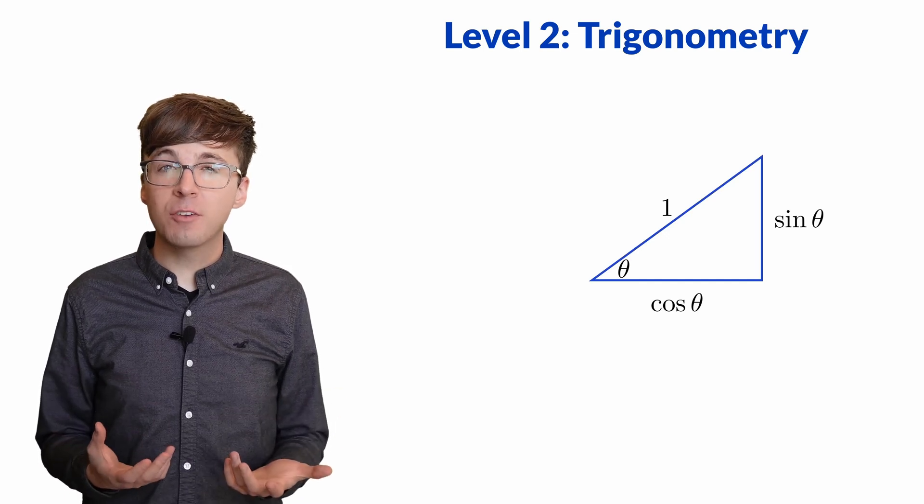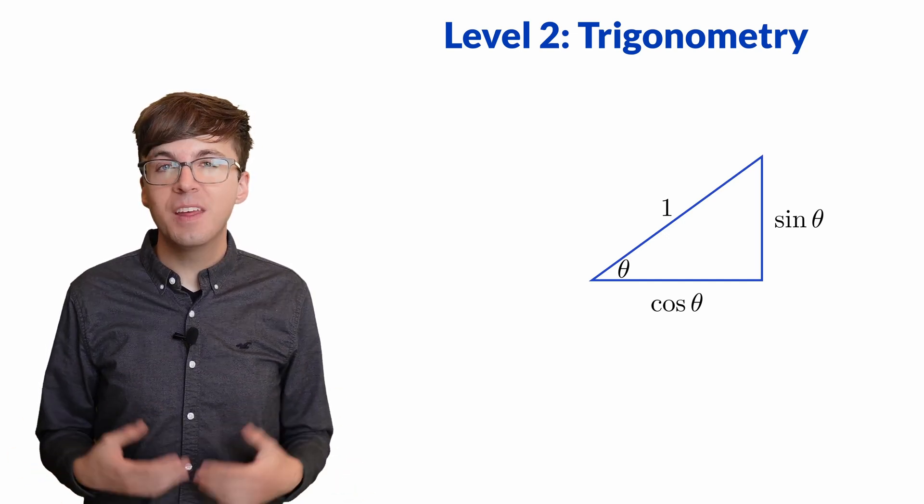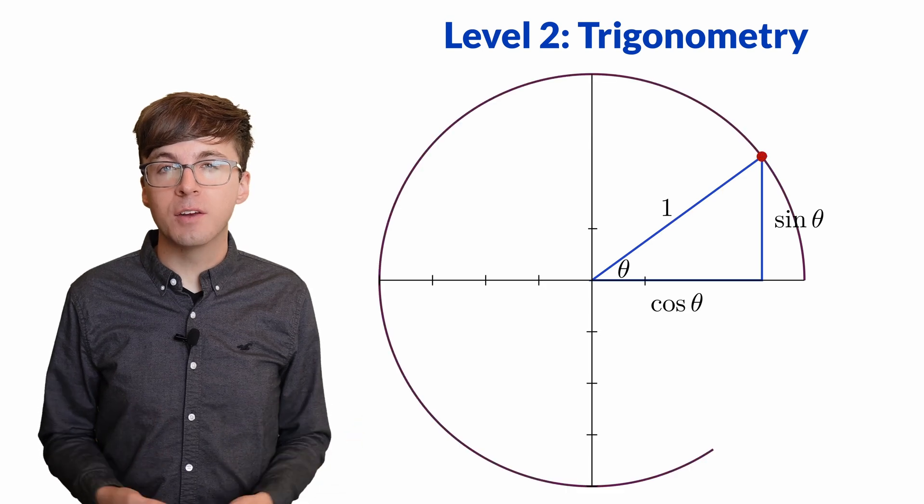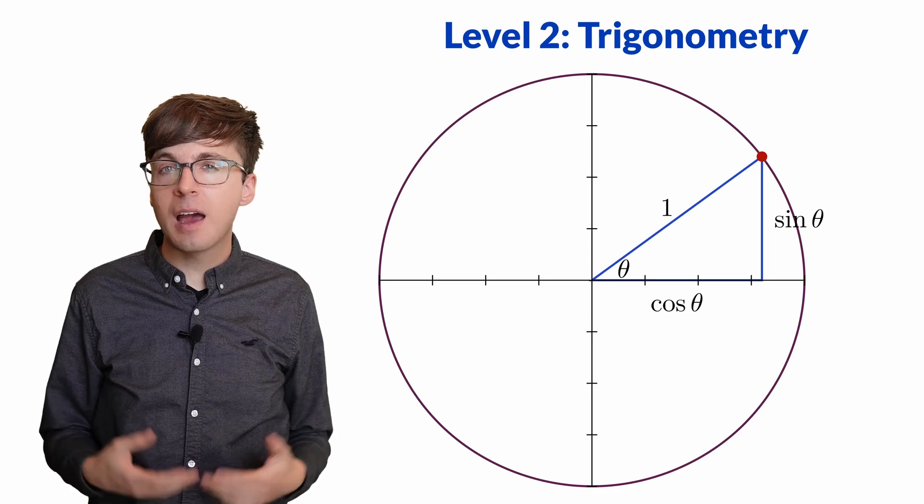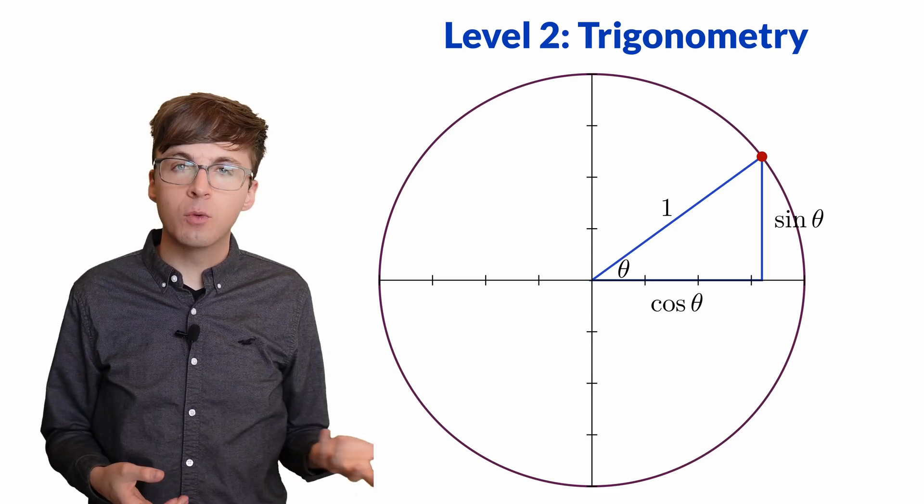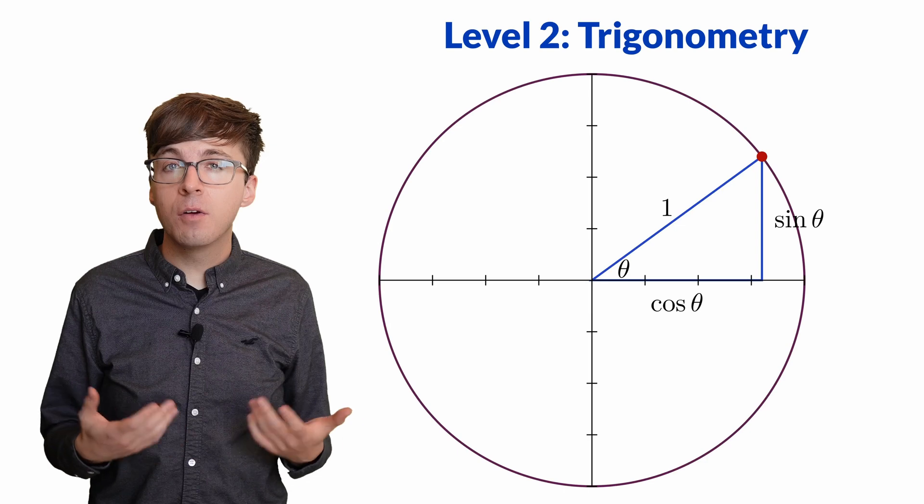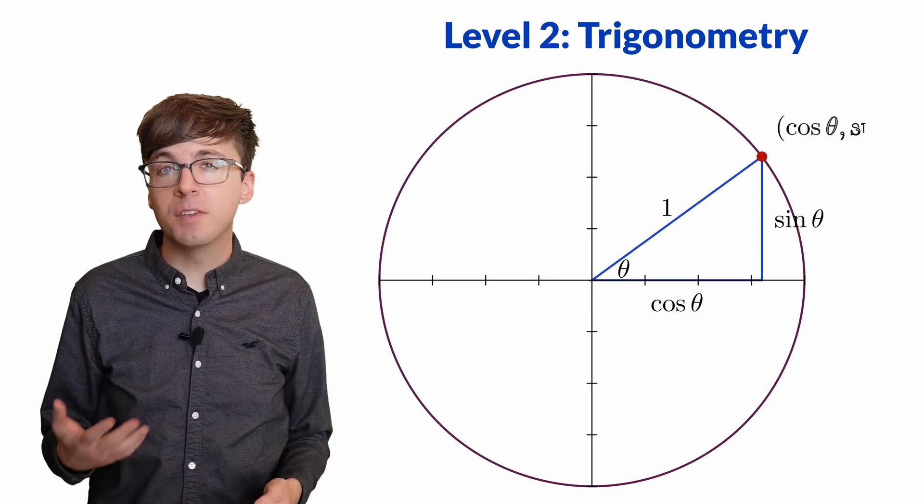This works great for acute angles that we can fit in a right triangle, but can we define these trig functions for obtuse angles? The key is the circle of radius 1, that we call the unit circle. Since we scaled our right triangle to have hypotenuse 1, which equals the radius, the right triangle always has this vertex on the unit circle.